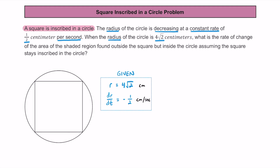So what's the question they're actually asking us? They're asking: what is the rate of change of the area of the shaded region found outside the square but inside the circle? That shaded region is the area outside the square but inside the circle — the four curved sections in each corner.